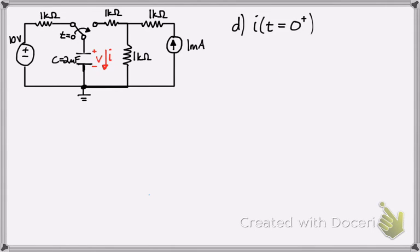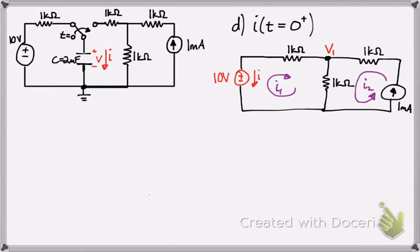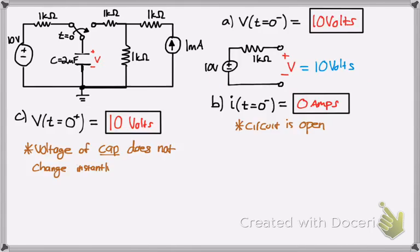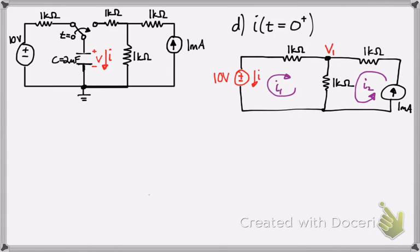Let's take a look at part D, which is the current right after the switch has been thrown — that's the current going through the capacitor. I'm going to redraw the circuit here. Big thing to note: notice how I drew that battery in red. That's not the battery on the far left — that is actually the capacitor. The capacitor behaves like a battery right when the switch is thrown, because we just determined there's 10 volts across that capacitor. Immediately when the switch is thrown, the charge stays on that capacitor, so it acts like a battery producing 10 volts, only momentarily for that instant. So you can replace the capacitor with a battery just for analogy purposes when solving the circuit.